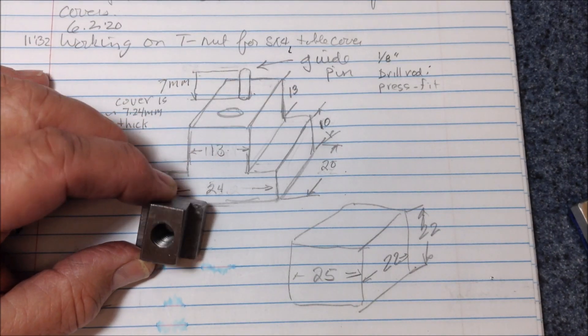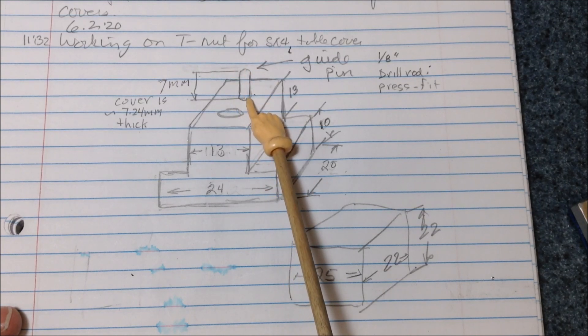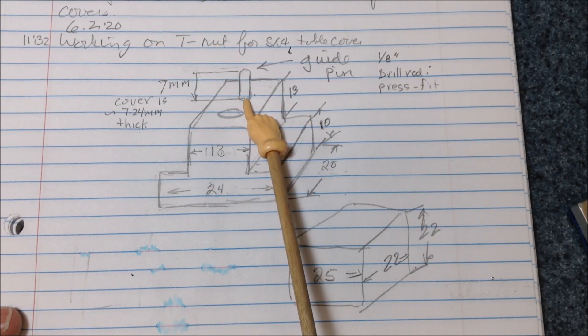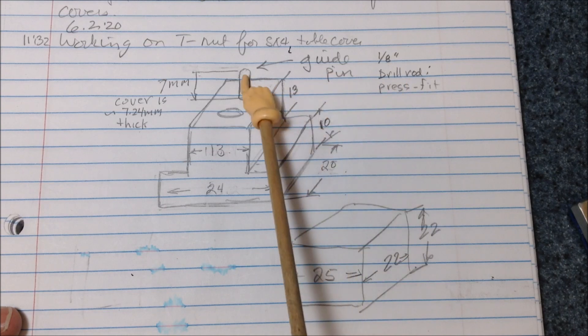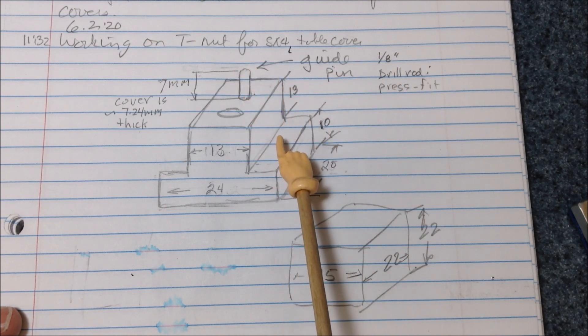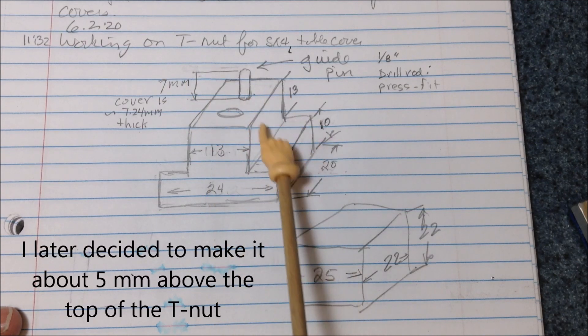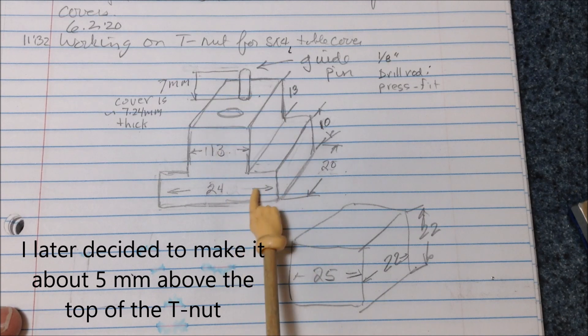And here's one of the steel T-nuts. This pin is just an alignment pin and it will be one-eighth inch diameter drill rod and I'll drill a hole just under one-eighth inch and probably ream it and then press fit the drill rod into that. It'll be rounded on top and it'll protrude from the block by seven millimeters. Total length will probably be about 10 to 12 I guess. Didn't specify that.